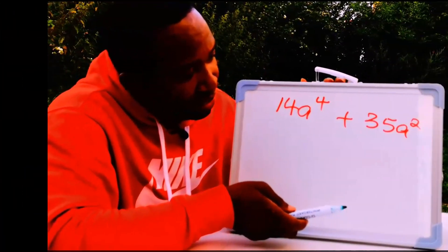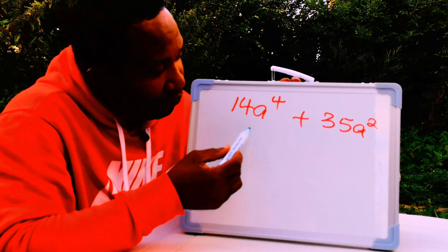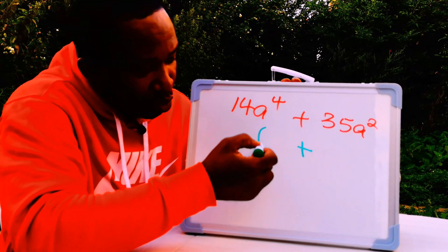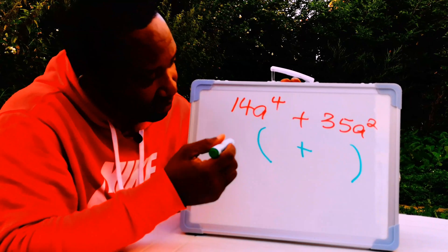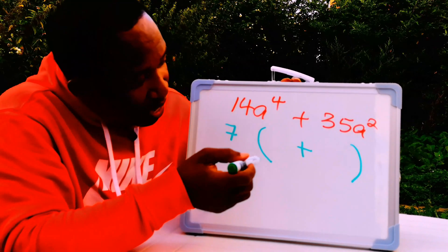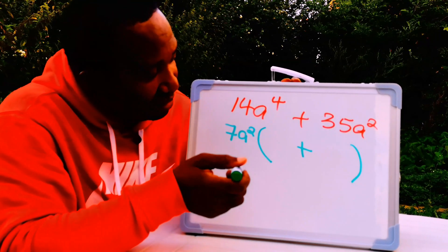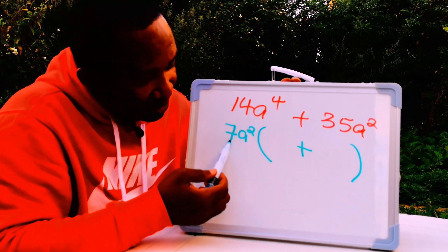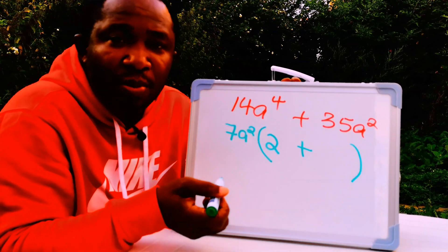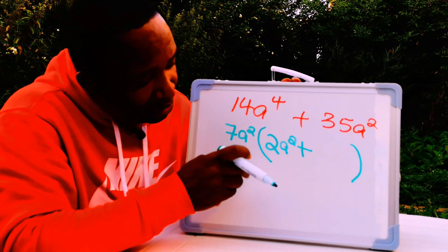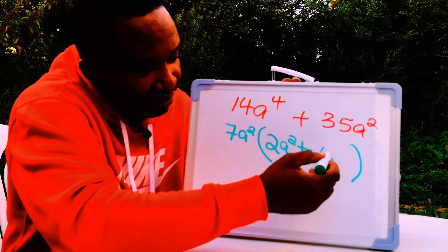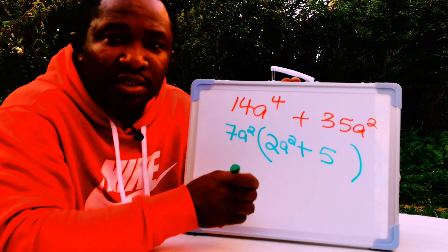Next we have 14a to the power of 4 plus 35a squared. We open a bracket. What is common on both sides? 7 is common because 7 goes into 14 and into 35. Also a squared is common on both sides. 7 times 2 gives 14, and a squared times a squared gives a to the power of 4. 7 times 5 gives 35. Hence 7a squared is the common factor, giving 7a²(2a² + 5).